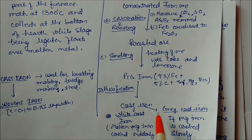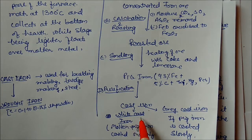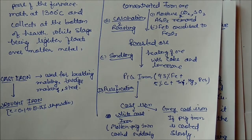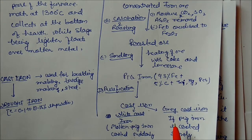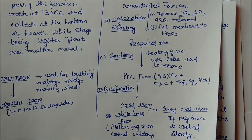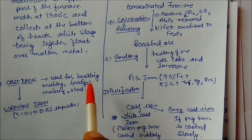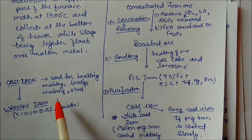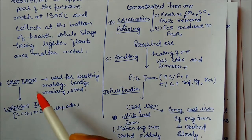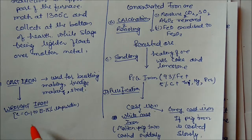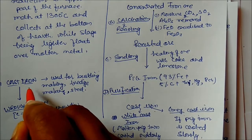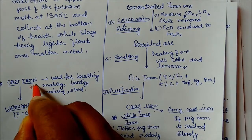On purification we get two types of iron. First is cast iron: white cast iron is formed when molten pig iron is cooled suddenly, and gray cast iron is formed when it is cooled slowly. Cast iron is used for building construction, bridge making, and steel production.